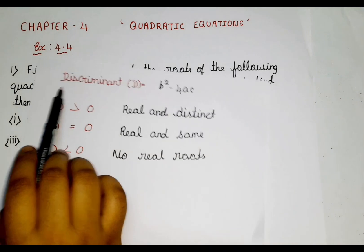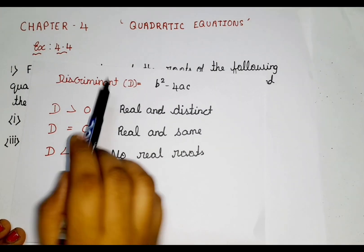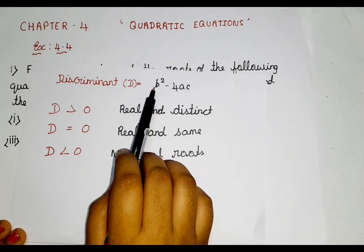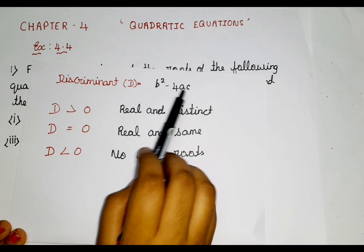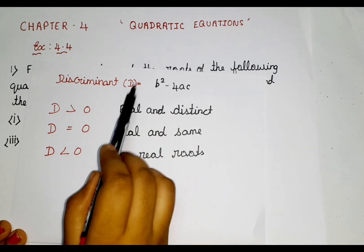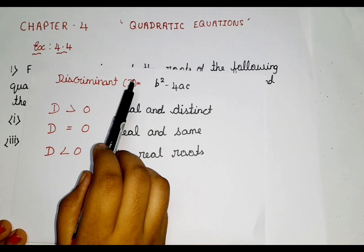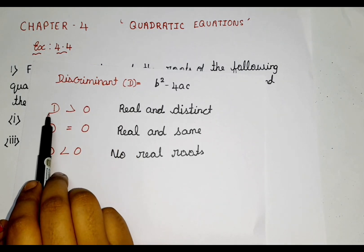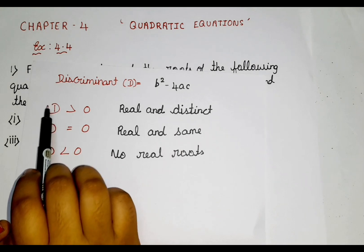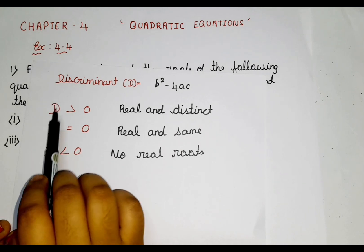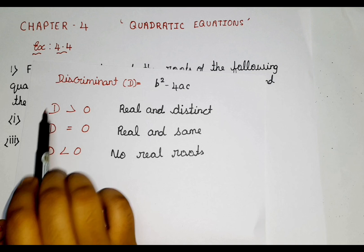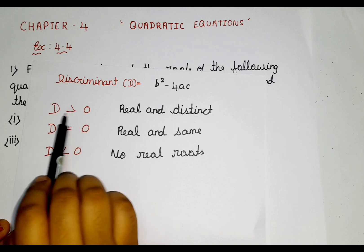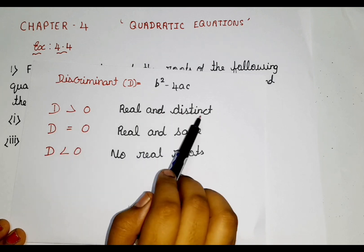First we are supposed to find the discriminant by using this formula that is B square minus 4AC. Discriminant is represented as D, capital letter D. If the value is a greatest number compared to 0, then we are supposed to say that it is real and distinct.